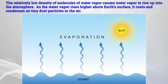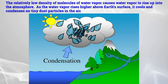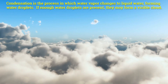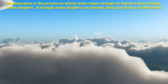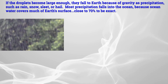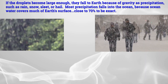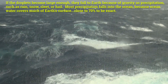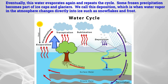The relatively low density of molecules of water vapor causes water vapor to rise up into the atmosphere. As the water vapor rises higher above Earth's surface, it cools and condenses on tiny dust particles in the air. Condensation is the process in which water vapor changes to liquid water, forming water droplets. If enough water droplets are present, they may form a visible cloud. If the droplets become large enough, they fall to Earth because of gravity as precipitation, such as rain, snow, sleet, or hail. Most precipitation falls into the ocean because ocean water covers much of Earth's surface, close to 70%. Eventually, this water evaporates again and repeats the cycle.